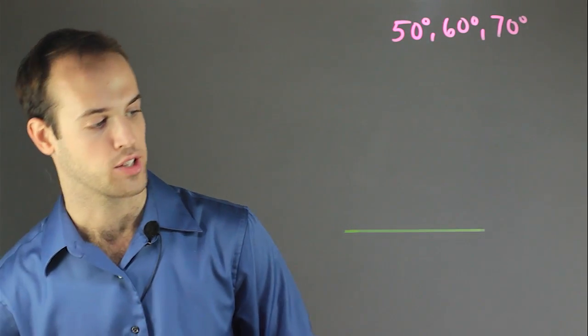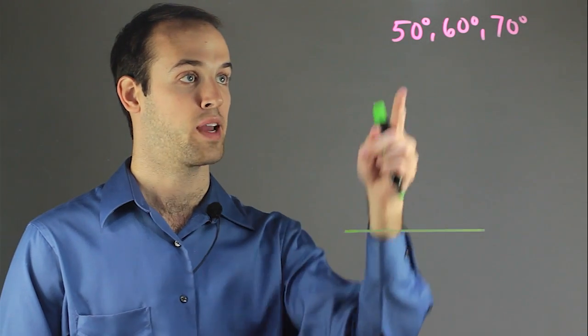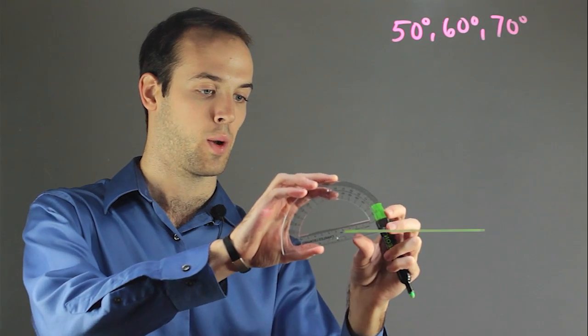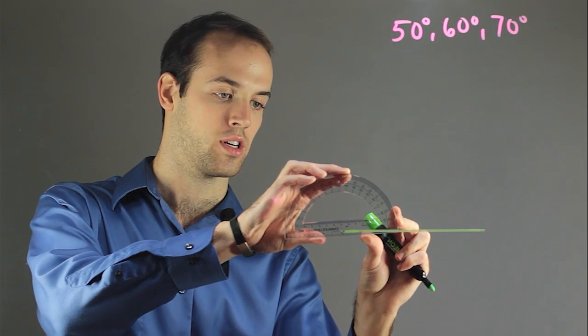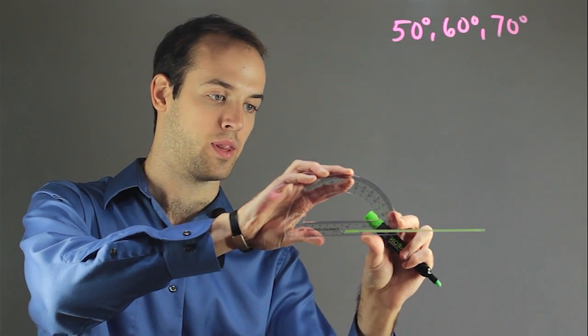The next thing I want to do is get my protractor out. And I'm going to be looking to make a 50 degree angle from this point. So what I want to do is line up the protractor so that it's in line with the base that I drew.